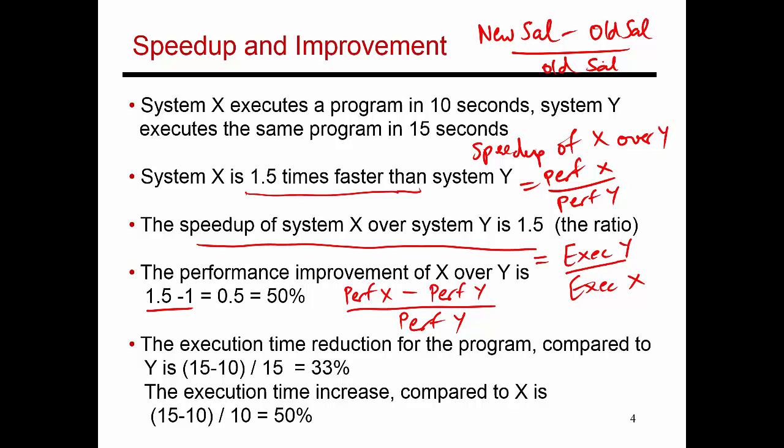And you'll see that this is nothing but performance x divided by performance y minus 1. Performance y divided by performance y. So performance x by y is nothing but speedup of x over y. And so speedup minus 1 gives you performance improvement.